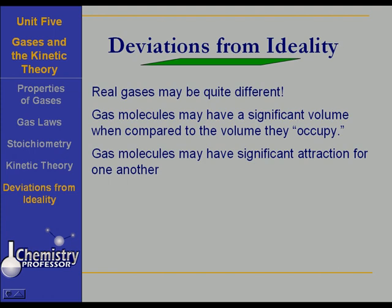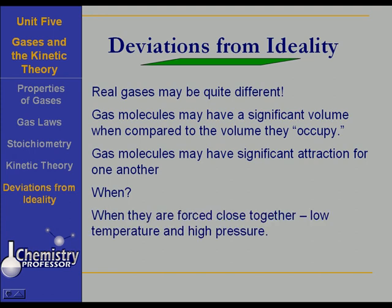Gas molecules may have a significant attraction for one another. It could be that gas molecules aren't as far apart in some circumstances as we think, and they are attracted to each other. And that causes definite deviations from the ideal. When are gas molecules likely to have significant attraction for one another? When they are forced close together in the circumstances of low temperature and high pressure. And that is when we get the greatest deviations from ideality.